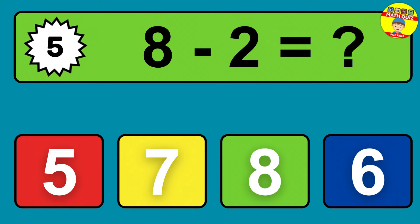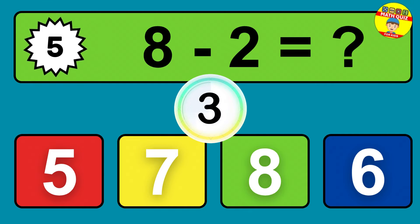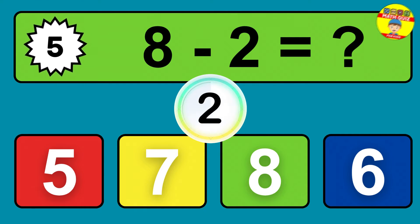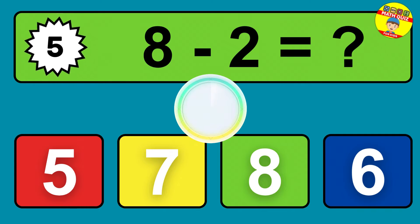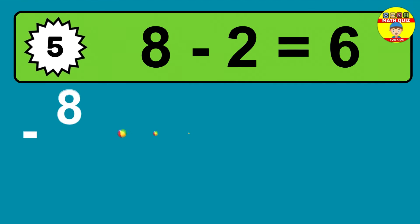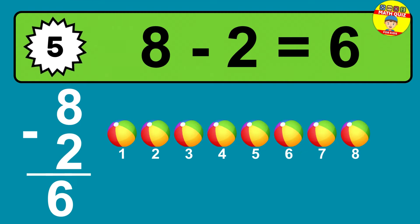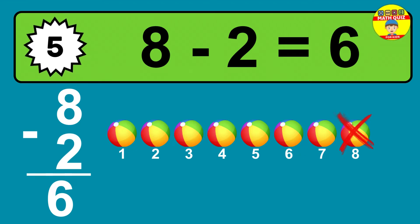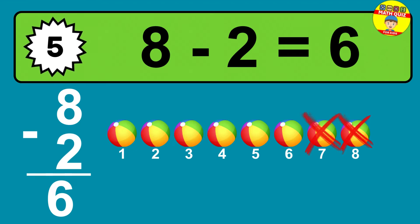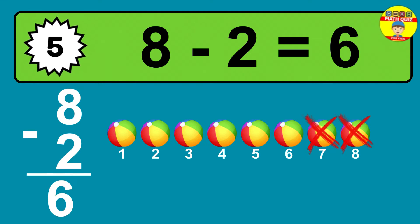Question five: eight minus two equals what? The answer is eight minus two is six. Let's count it: one, two, three, four, five, six.